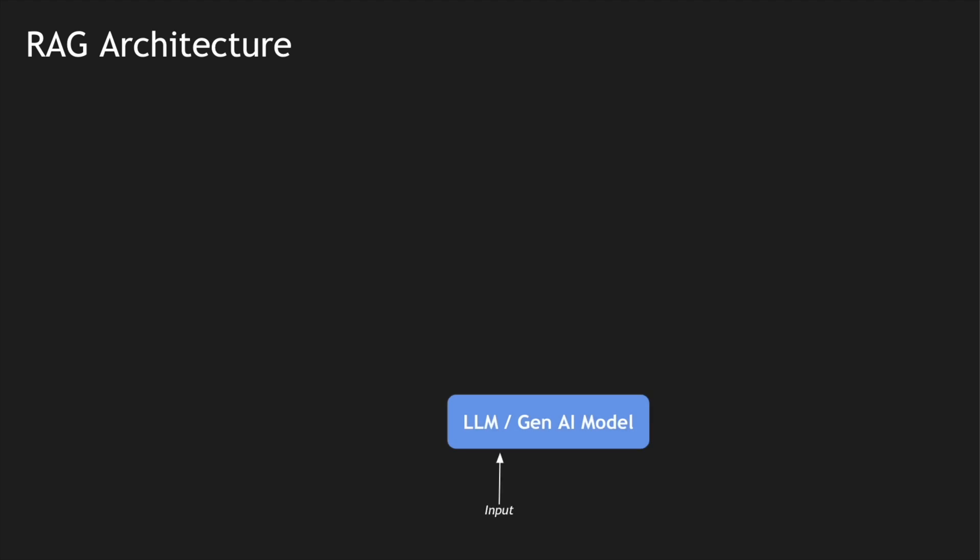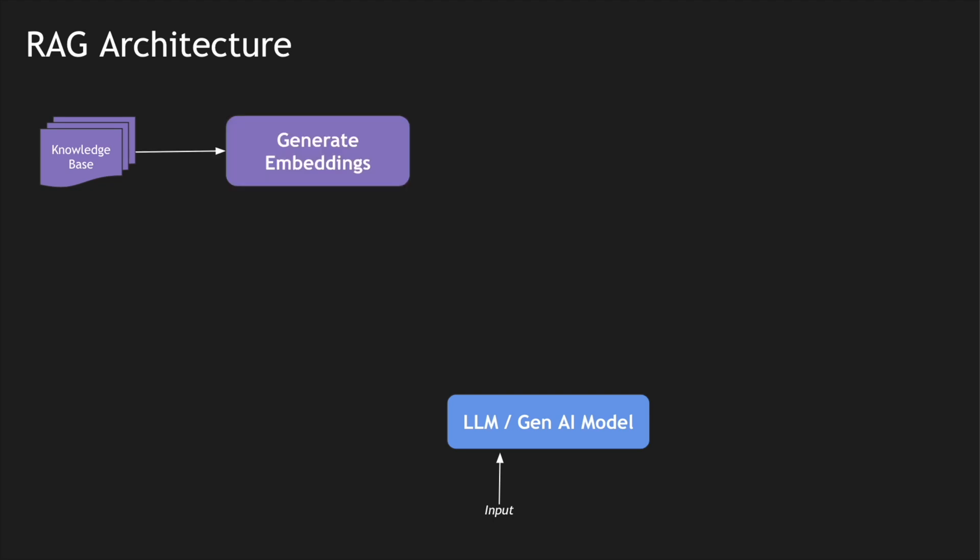To understand the RAG architecture: we know we will be giving an input to the Gen AI model. There is a knowledge base we need to get data from — let's say we need temperature information, so we get a source of truth from an external weather application. We need to convert the data into smaller chunks so we can convert them into a machine-understandable language, for example vectors or embeddings. We store these in a database that can host vector indexes, which are the language LLMs talk in.